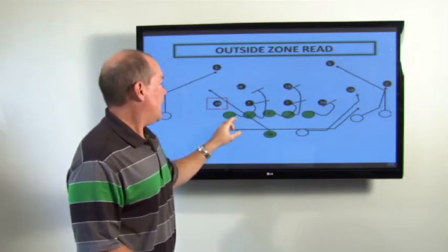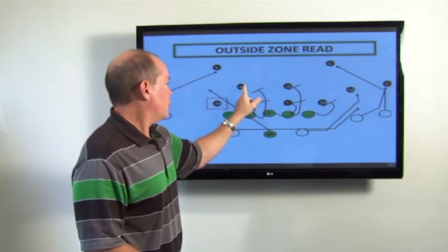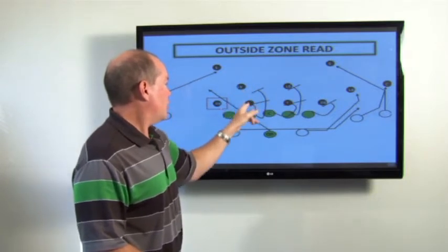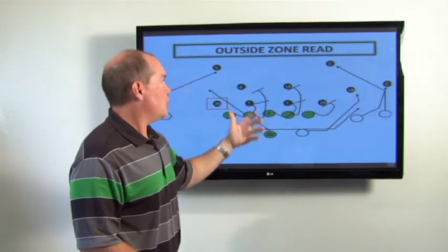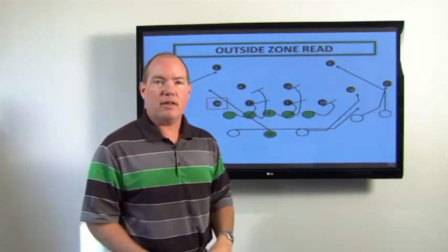So now on the backside, we're fast zoning. These guys are going to scoop. These two are responsible for these two because we're going to be blocking the backside end. This is just our basic way of running the outside zone.